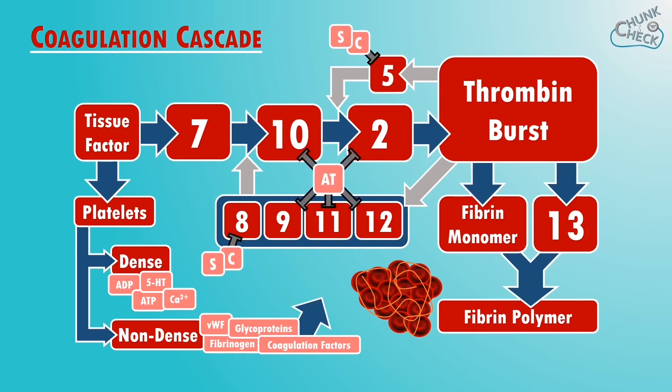Antithrombin also slows down the clotting process, and this inhibits factors 9, 10, 11, 12 and thrombin to slow down the clotting process.